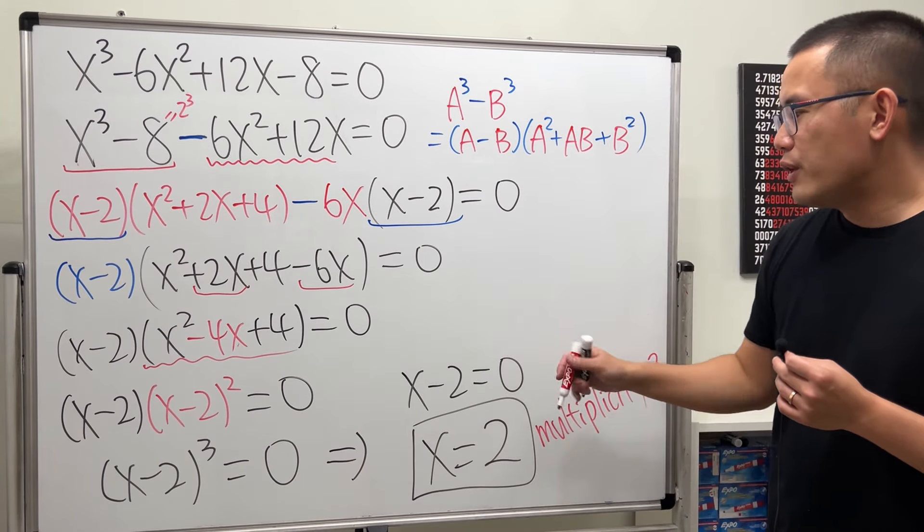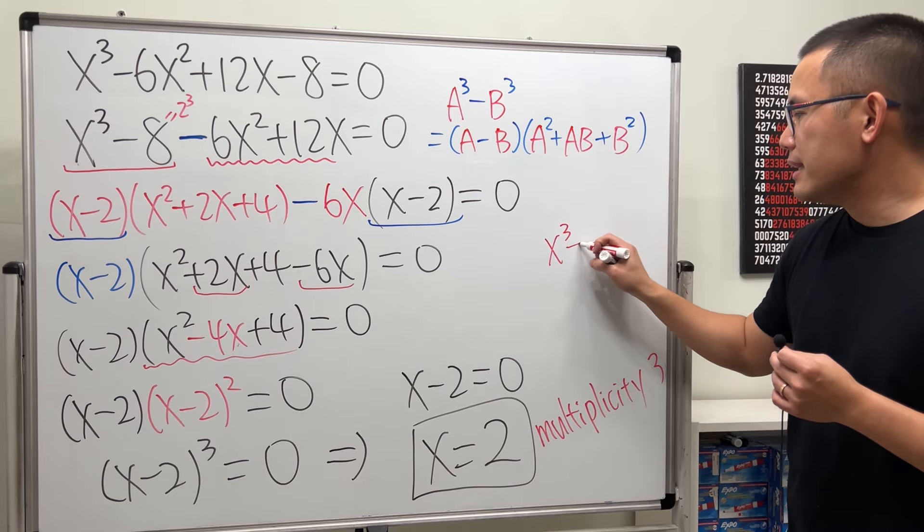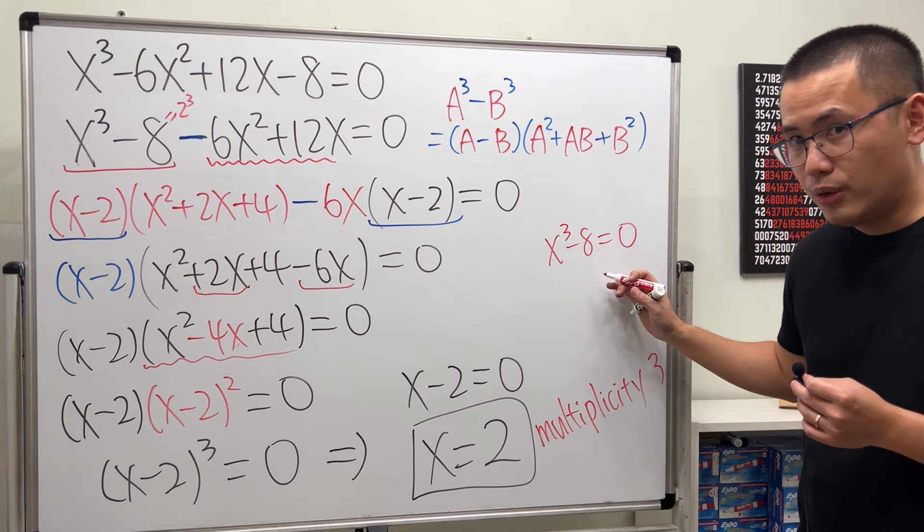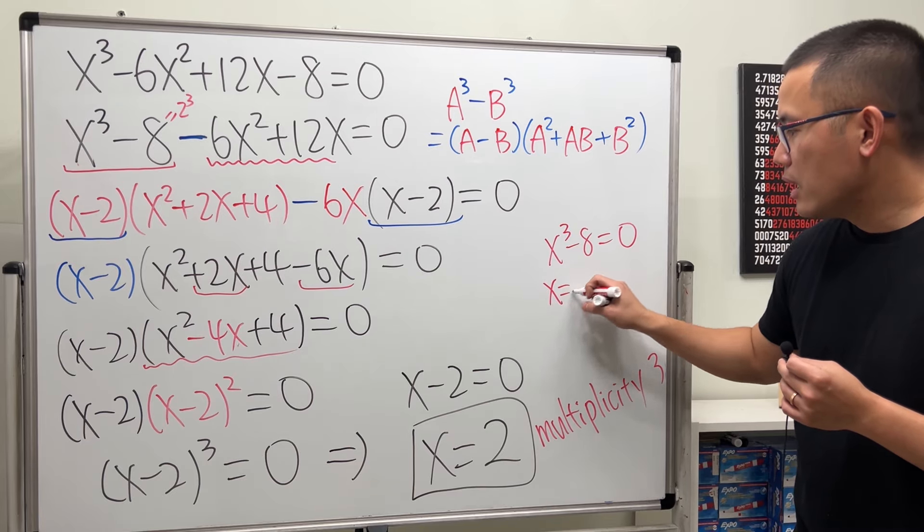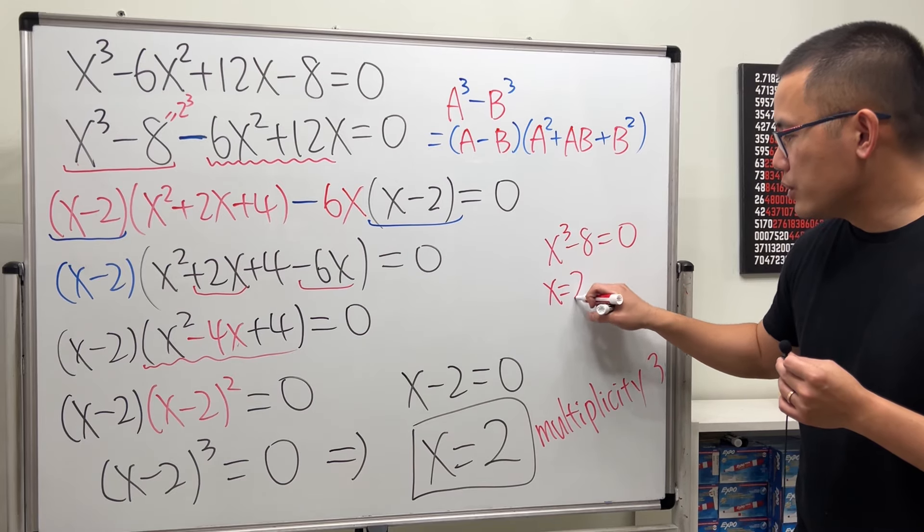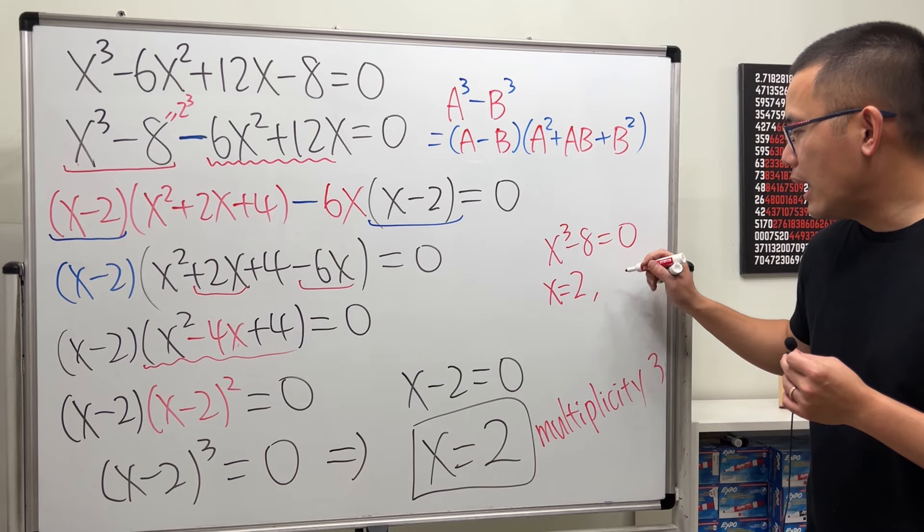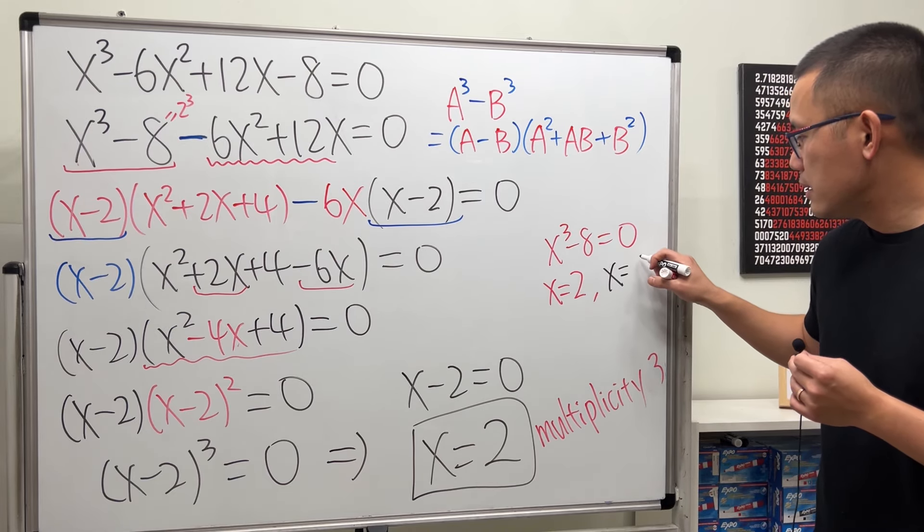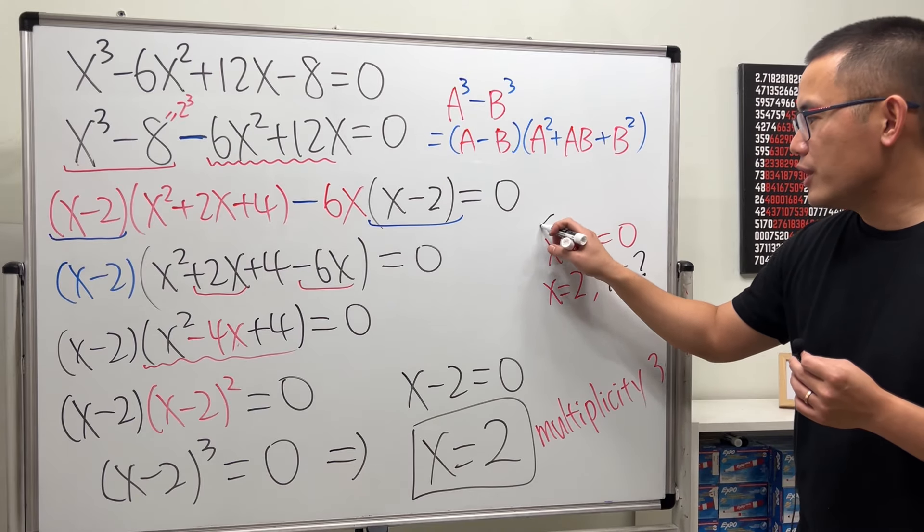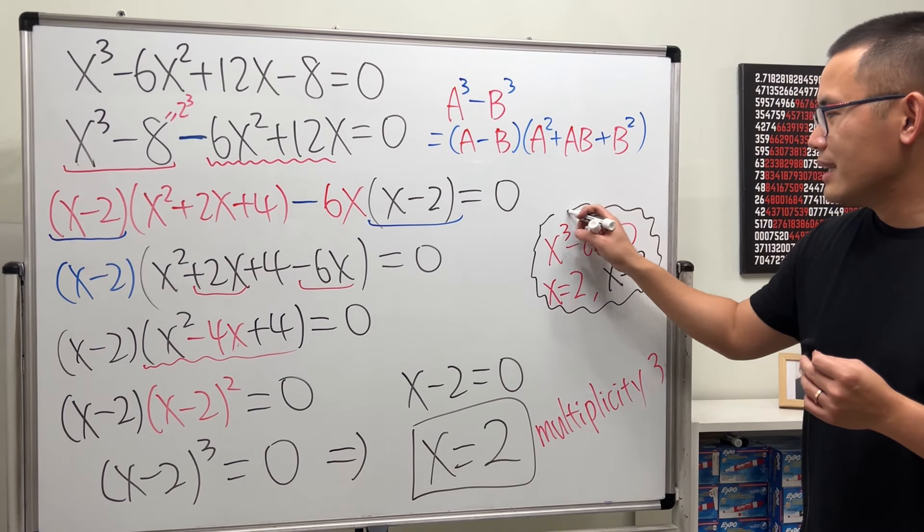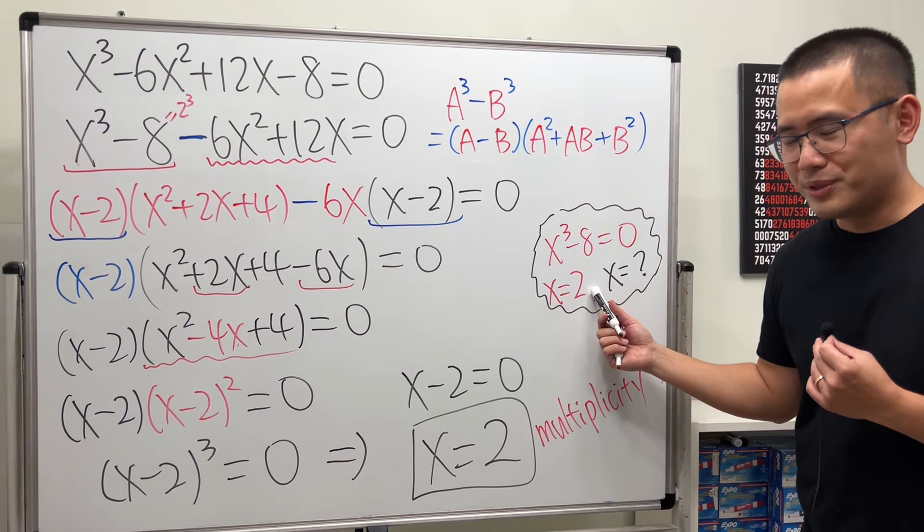So, this equation is very different compared to x cubed minus 8 is equal to 0. Because this equation, it has a real solution, 2. But it has two more complex solutions. And if you want to see how to solve this equation, you can check out my other video for it. The link to this video will be in the description.